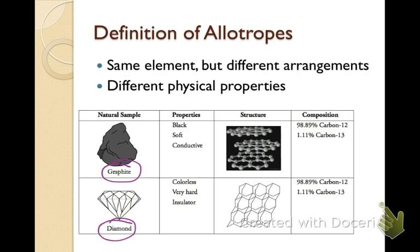Graphite is made of carbon atoms, and you can actually look at the structure — those are carbon atoms all arranged in sheets, with multiple sheets layered one right after the other. So as you're writing with your pencil, you're actually shaving off sheets of carbon atoms. Graphite has a black or grayish color, it's soft, and it can also conduct electricity. It's made of 98.89% carbon-12 and 1.11% carbon-13 — those are two different isotopes of carbon found in graphite.